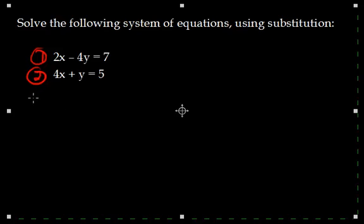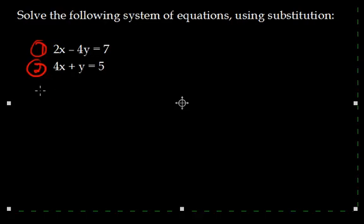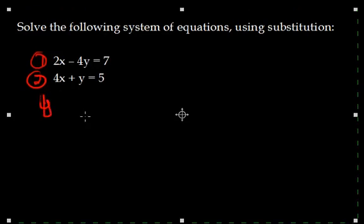So what we're going to do is we're going to rearrange equation 2 to solve for y. So that looks like y equals negative 4x plus 5.